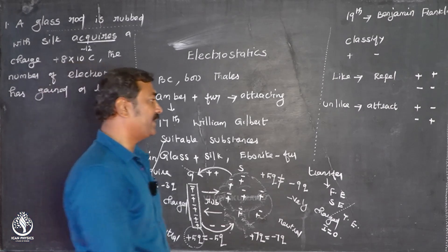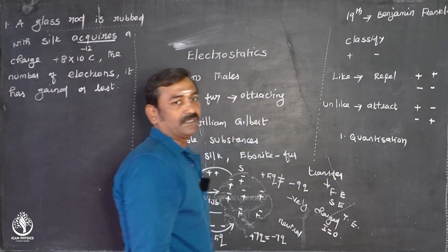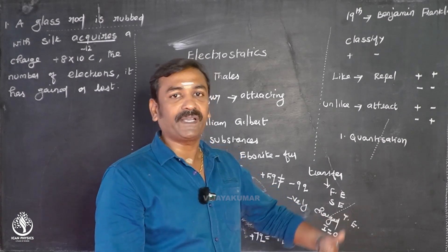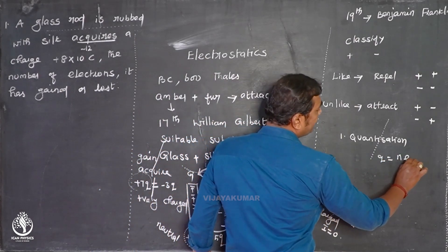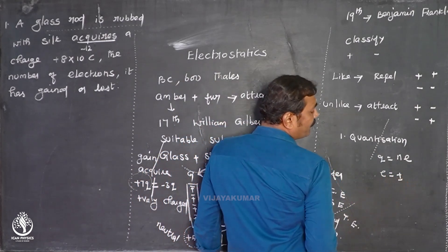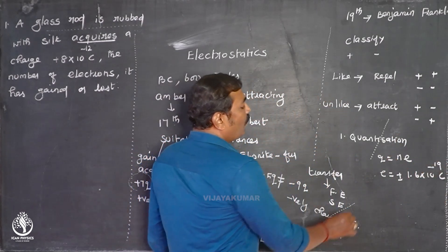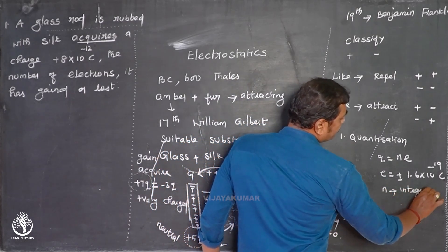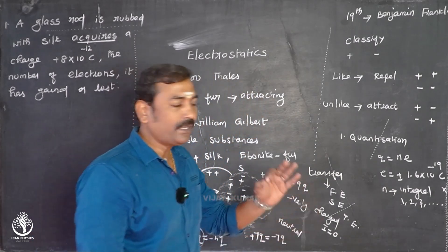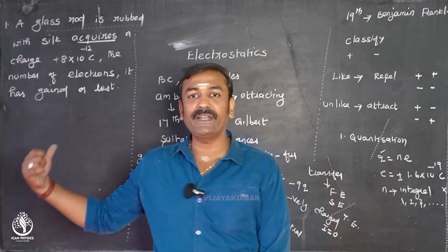Charges have certain properties. The first property is quantization of charges. The fundamental unit of charge E is the charge carried by the electron. The formula is Q equals NE, where E is the magnitude of charge of an electron or proton, equal to plus or minus 1.6 into 10 to the power minus 19 coulombs. N is an integral multiple — it must be a whole number like 1, 2, 3. Using this formula, we can calculate the number of charges.